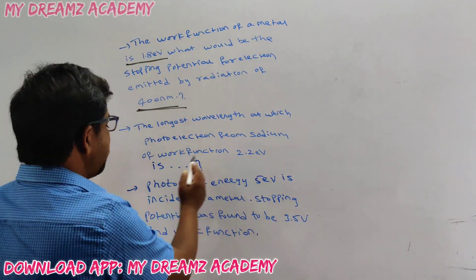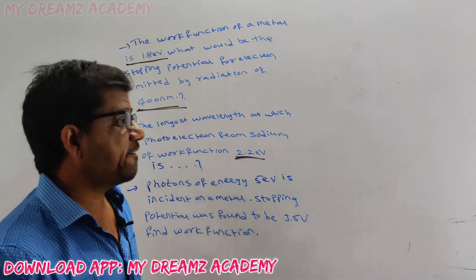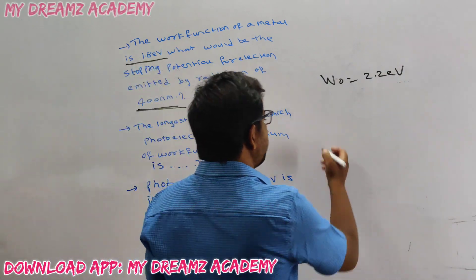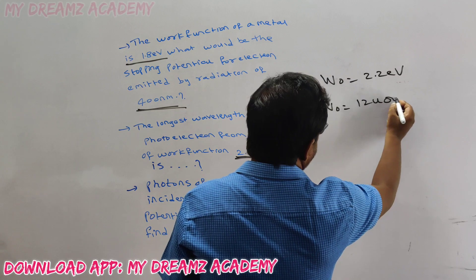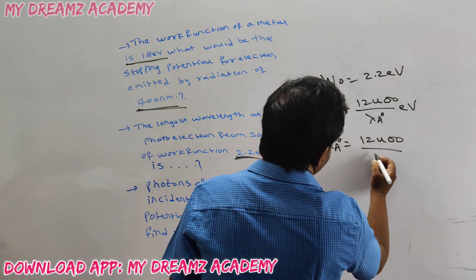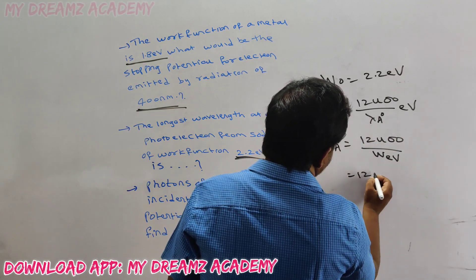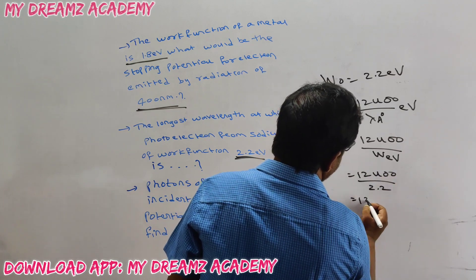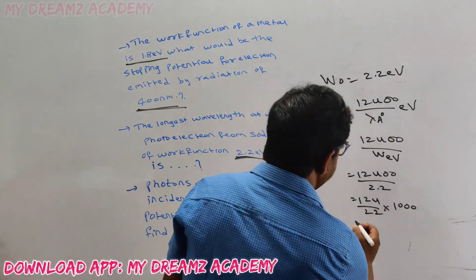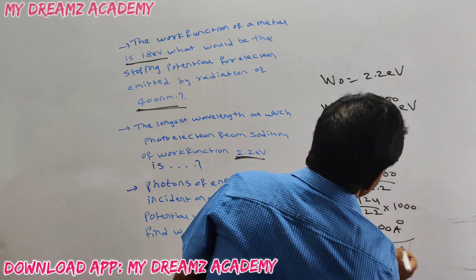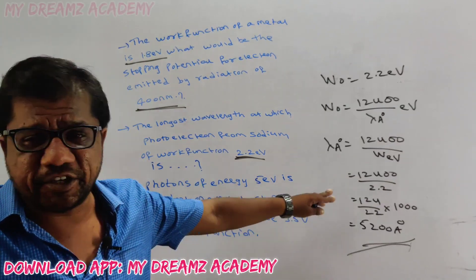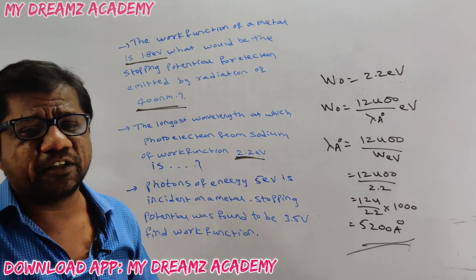Second question: Find the longest wavelength at which a photoelectron from sodium can be emitted, given the work function is 2.2 electron volts. Using work function = 12400 / wavelength in angstroms, we get wavelength = 12400 / 2.2, which is approximately 5200 angstroms. This is the longest wavelength because energy is inversely proportional to wavelength.